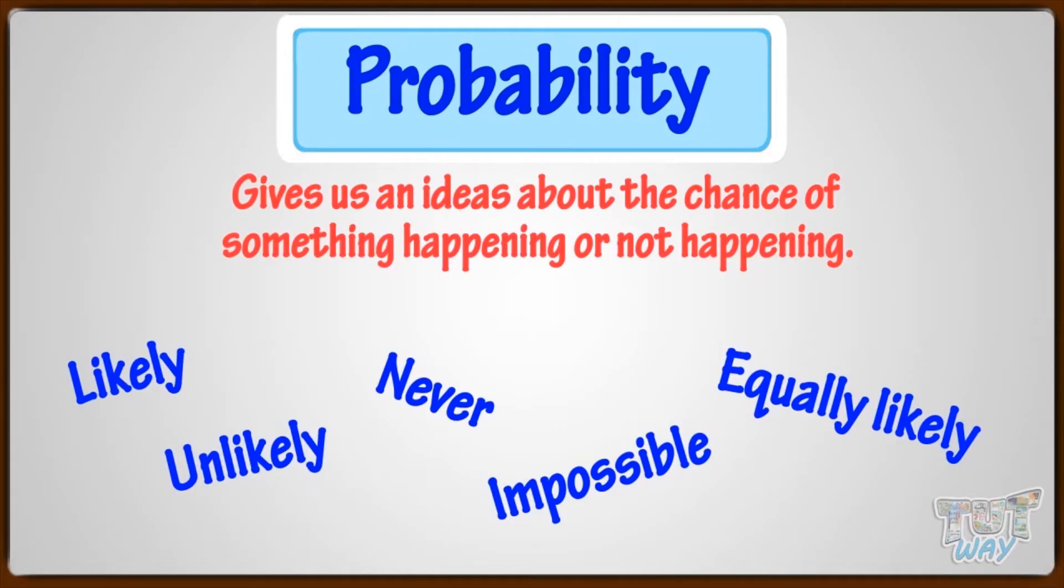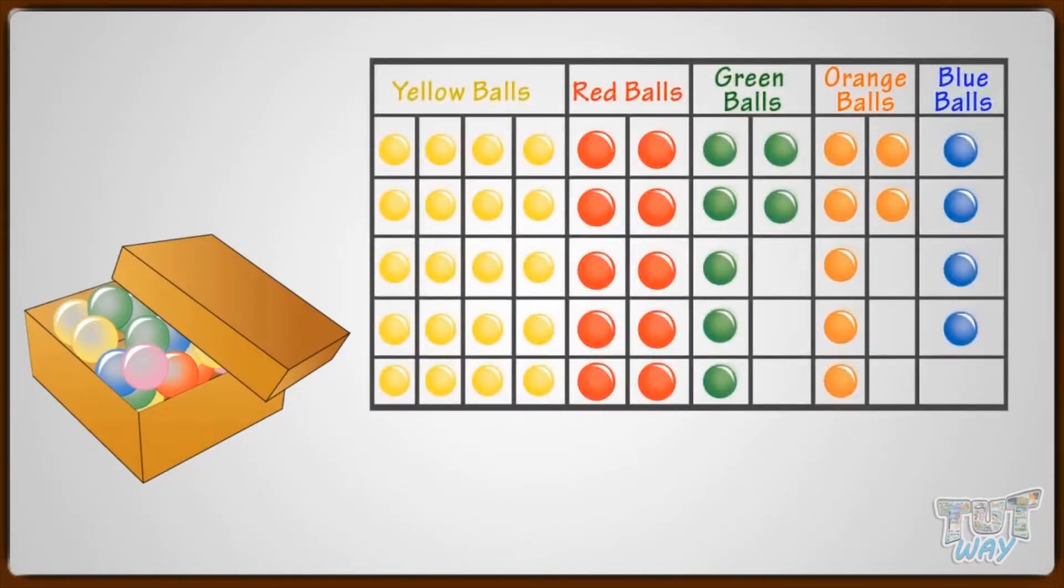Now, let's answer a few questions based on what we learned on probability. Sam has a big box which is filled with balls of various colors and the table here shows the number of different colors of balls in the box.